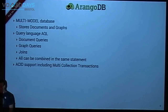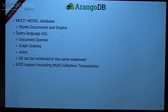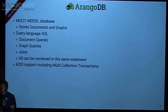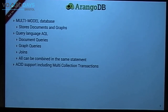As I'm doing some live sessions, I'll introduce the technology: ArangoDB. ArangoDB is a so-called multi-model database which allows storing documents, graphs, and key-values in one single technology. It's completely open source on GitHub. We have one query language called AQL that covers all data models — document queries, graph queries, joins — all in the same statement. You can start with document operations, continue with graph traversal, and combine it with key-value lookups. We also have ACID support including multi-collection transactions.